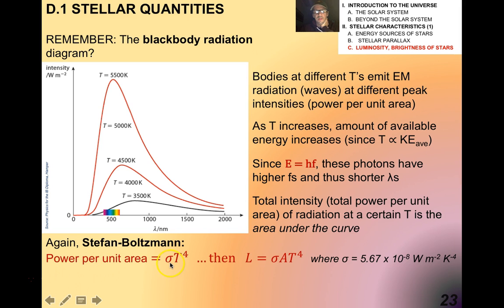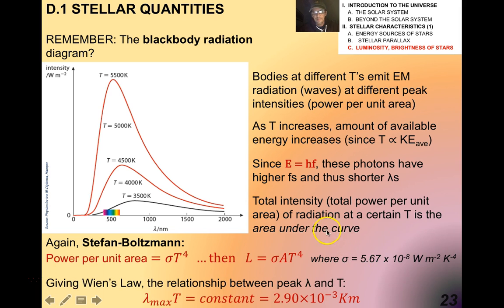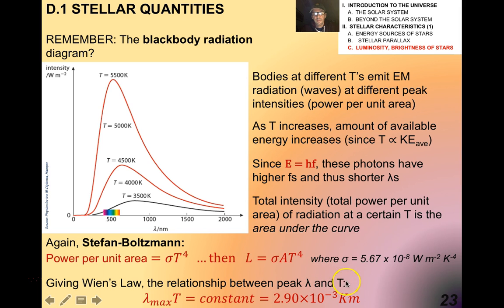Stefan-Boltzmann: power per unit area equals σ times T to the fourth, and L equals σ A times T to the fourth — given to you in your data booklet. And from Wien's Law, which we studied before, we get the relationship between peak wavelength and temperature.